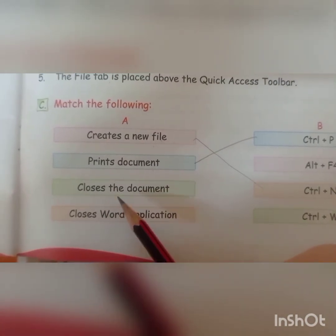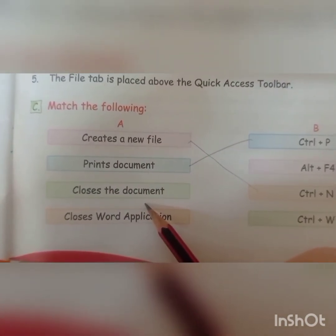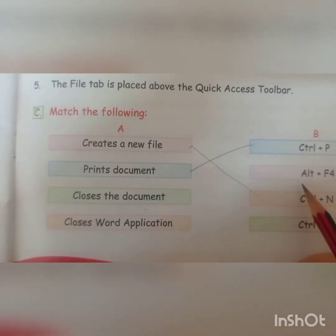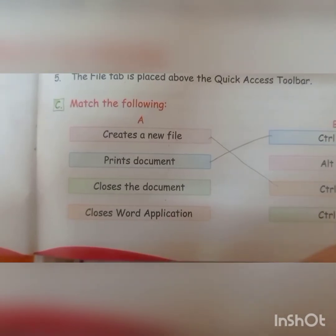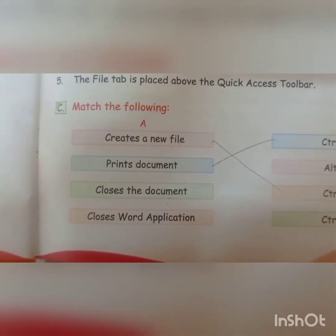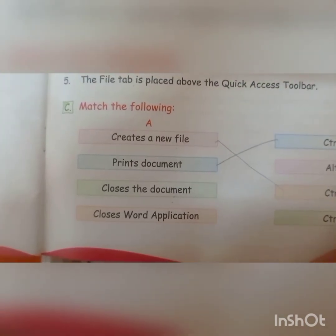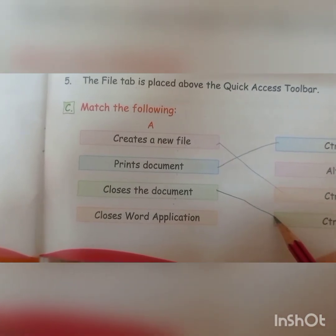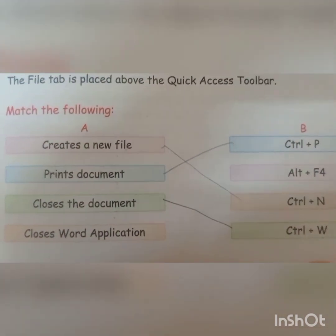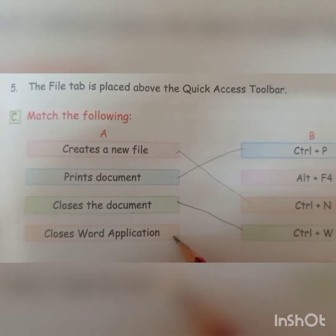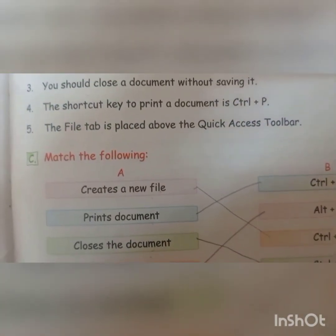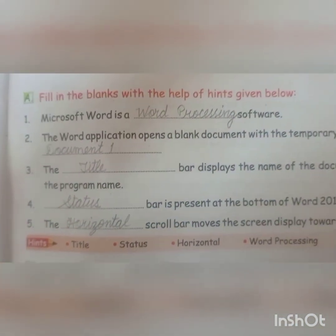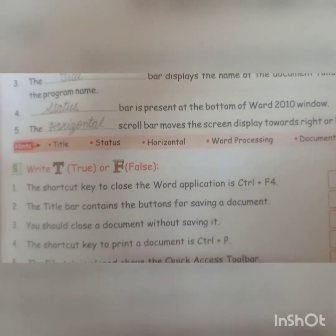Next is 'close the document.' The shortcut key is Control+W. If you want to close a document, use Ctrl+W. Next: 'close Word application' — if you want to close the Word application itself, use Alt+F4. Very good. Now complete this exercise in your book, click a photo of it, and submit it.